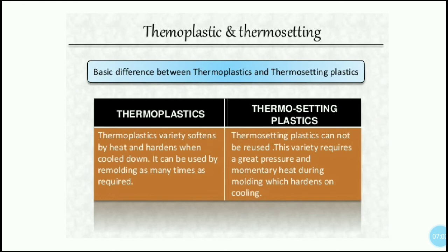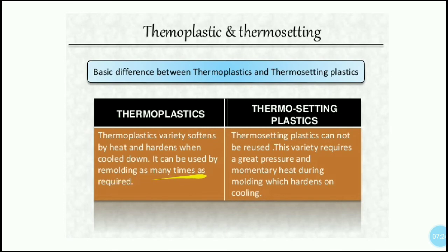There are two types based on heat behavior: thermoplastic and thermosetting. Thermoplastic softens by heat and hardens by cooling down. It can be remolded as many times as required — this means thermoplastic can be recycled or reused. If you heat it, it becomes soft; if you cool it, it becomes hard.